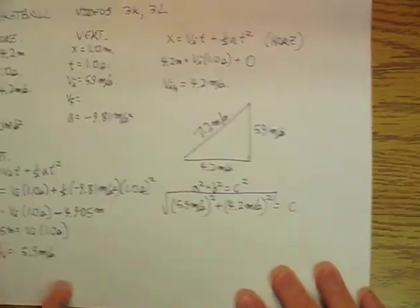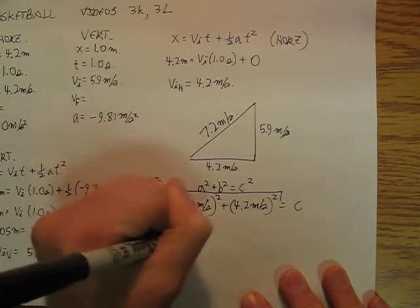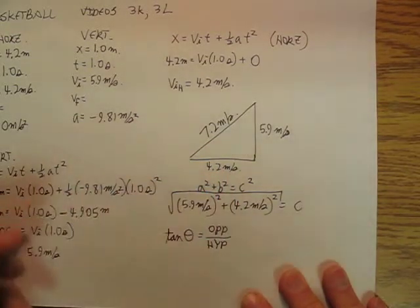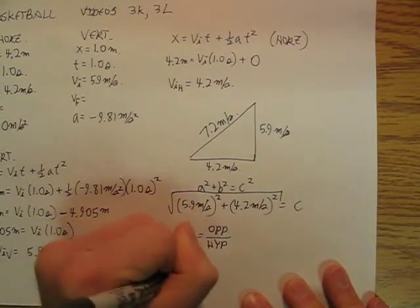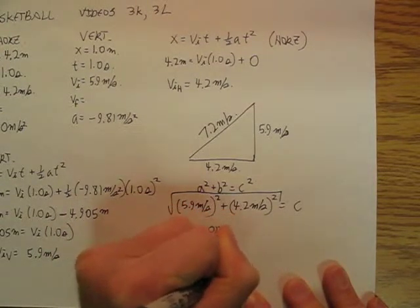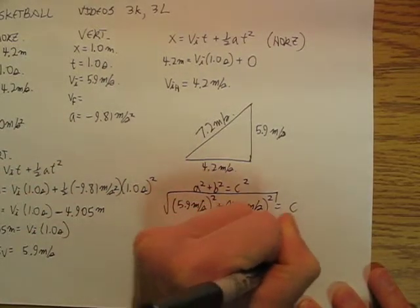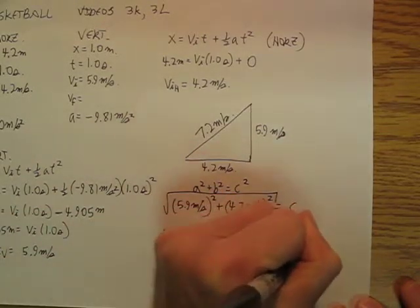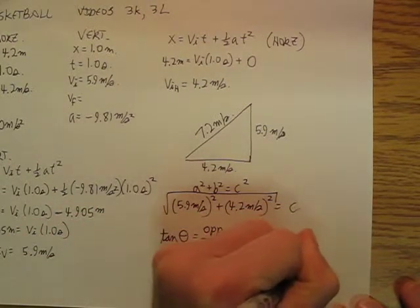And then I'm going to say that tangent theta equals opposite over hypotenuse, which means that theta equals the tan inverse of opposite over hypotenuse, and that's going to equal tan inverse of 5.9 meters per second divided by 4.2 meters per second.